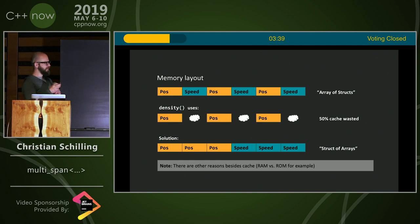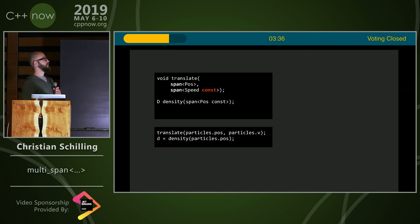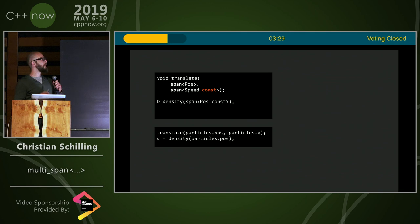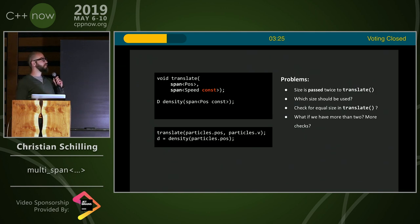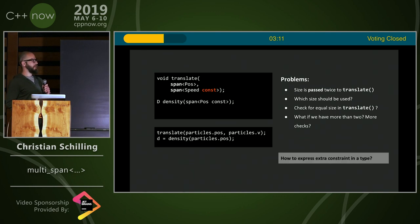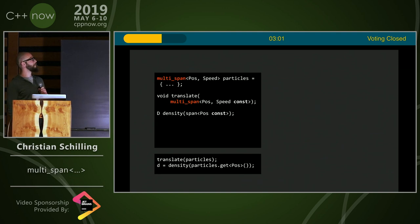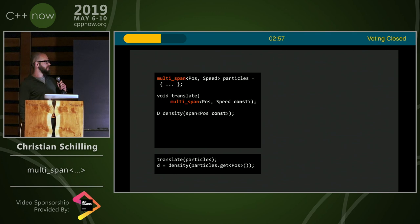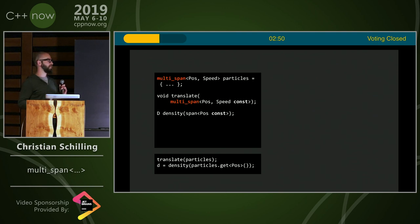So the question is how to write it. If you write it with a span, you'll end up with something like this, which does solve all those problems but creates a new one: we are now passing two sizes to the translate function, and we need to decide what to do if they're not the same. How could we express those constraints in the type or signature? What we came up with is multi-span — basically a collection of spans of different types, guaranteed to have the same size, and storing the size only once.